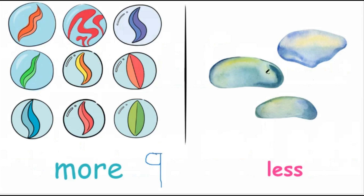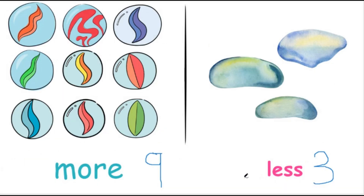How many pebbles are there? There are one, two, three. Nine is more than three. Three is less than nine.